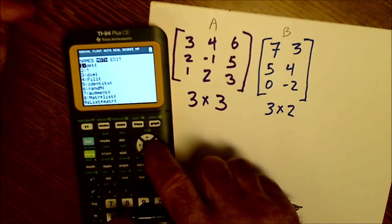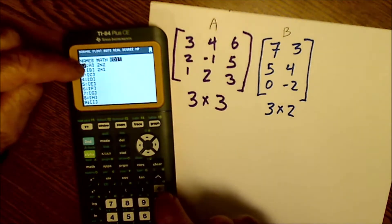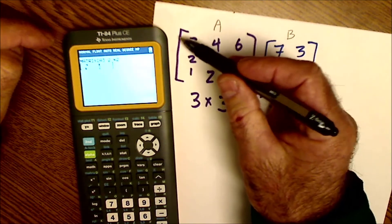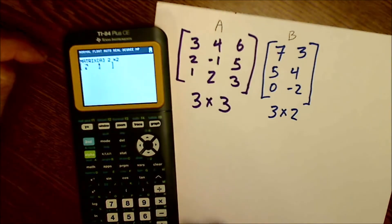The first thing I'm going to do is go over to edit. Edit's highlighted, A's highlighted, I hit enter. And I enter the dimensions. This is a three by three, three rows by three columns. So I enter three, three.